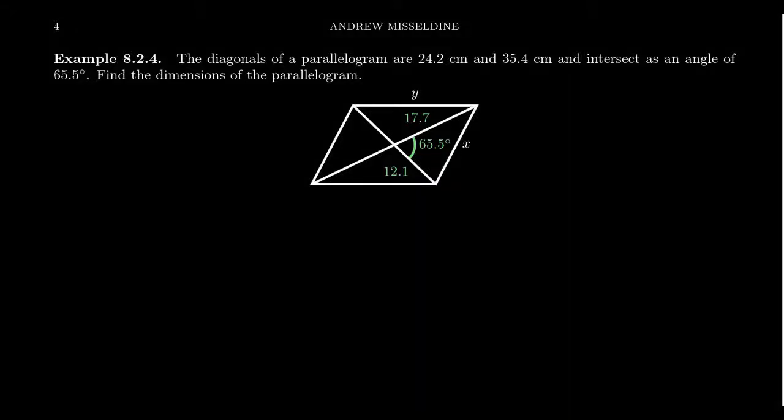Suppose we know the diagonals of a parallelogram are given as 24.2 centimeters and 35.4 centimeters. As a reminder, a parallelogram is going to be a four-sided polygon, aka a quadrilateral, where opposite sides are parallel.